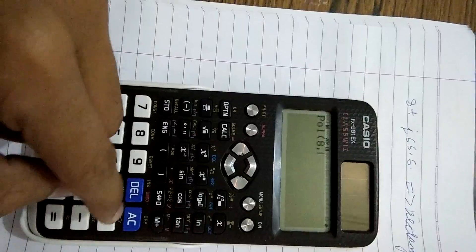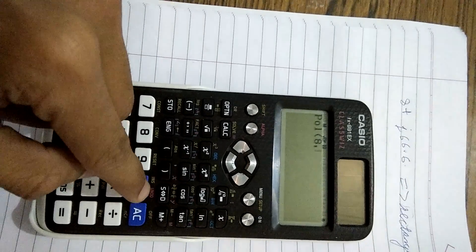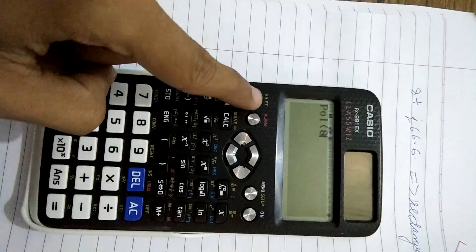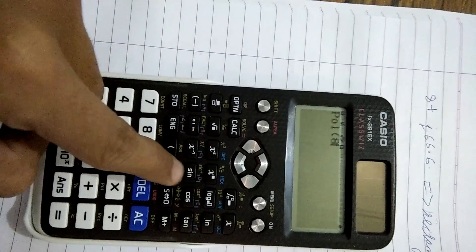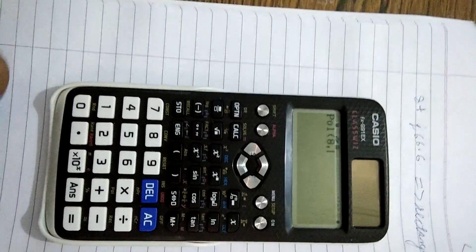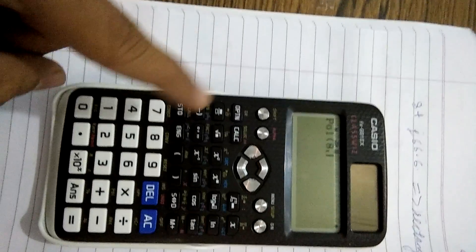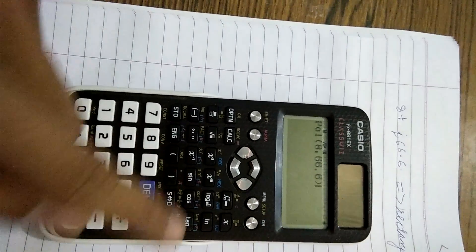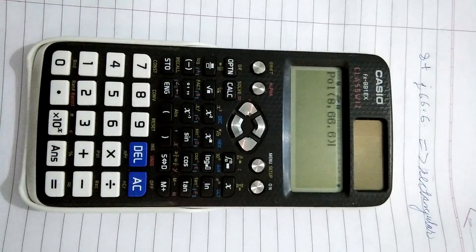8 comma. What I have done for comma is I've just pressed shift and the bracket close switch. The comma gets displayed. Now simply press 66.6 and close the bracket.